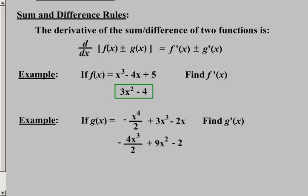3x³ becomes 9x², and negative 2x becomes negative 2. And you got a little bit of simplification that can be done there on the front or the lead term, and that simplifies down to negative 2x³.